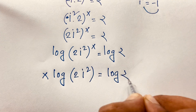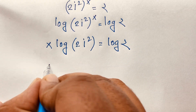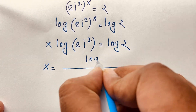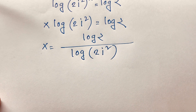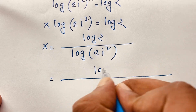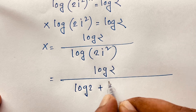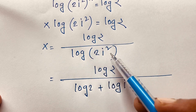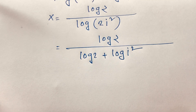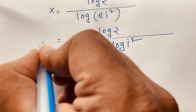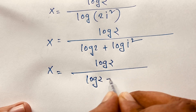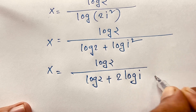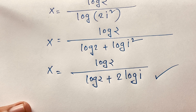So x = log 2 / log(2i²). Expanding the denominator using log(ab) = log a + log b: log(2i²) = log 2 + log(i²) = log 2 + 2·log(i). Therefore x = log 2 / (log 2 + 2·log i). This is our final answer for Method 2. Thank you all — if you enjoyed this video please subscribe to my channel for more interesting videos. Goodbye, take care.